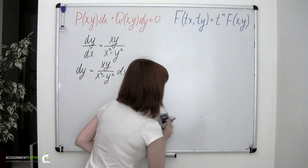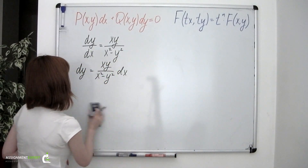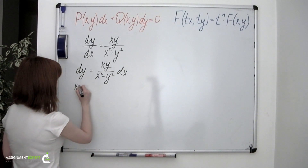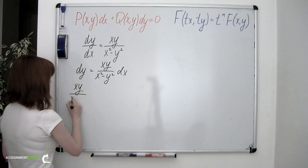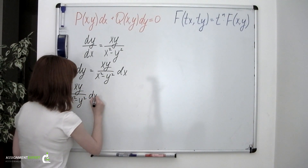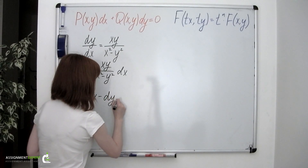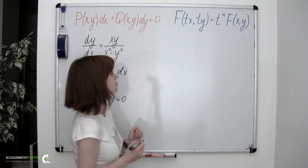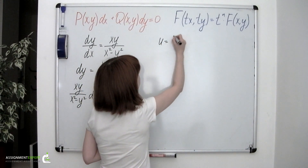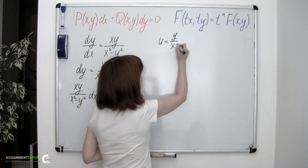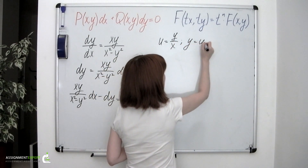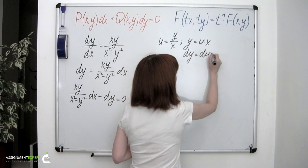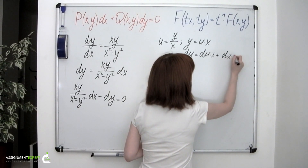Now, as we know that P and Q functions are both homogeneous of degree 0, our equation is homogeneous and we can move to Step 3. We introduce the new variable u equals y over x, and then y equals u times x, and dy equals du times x plus dx times u.